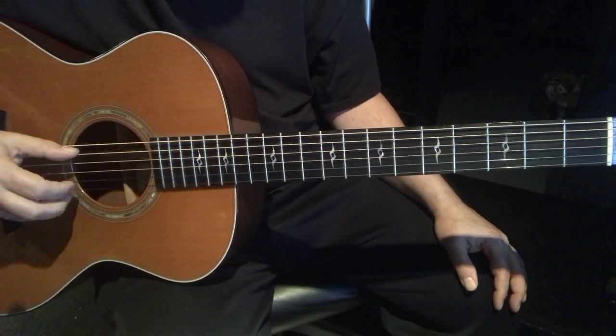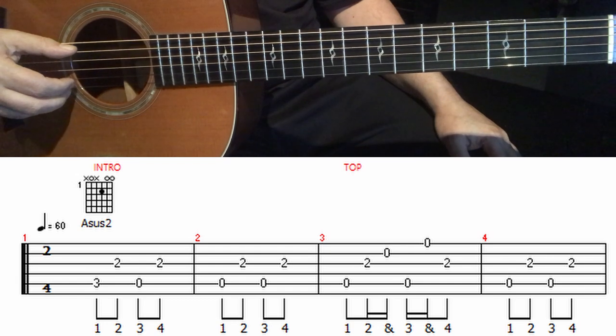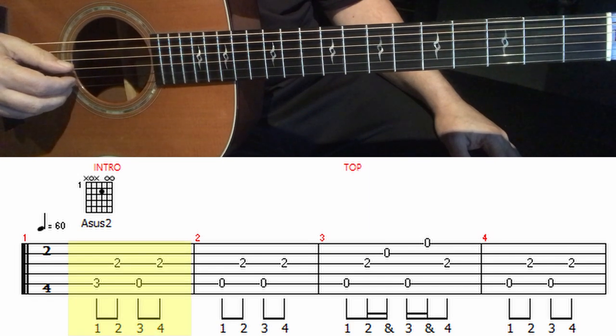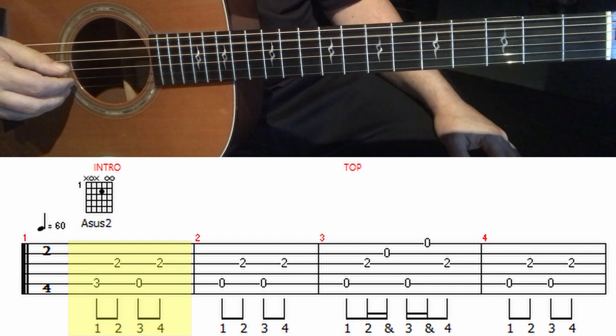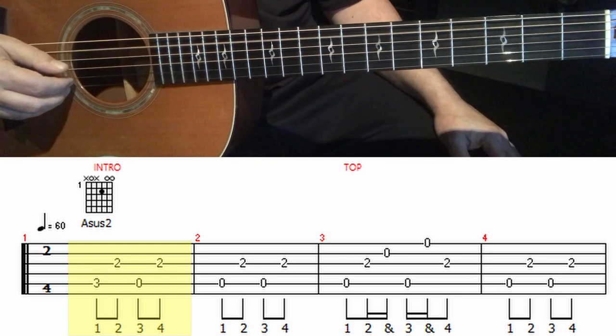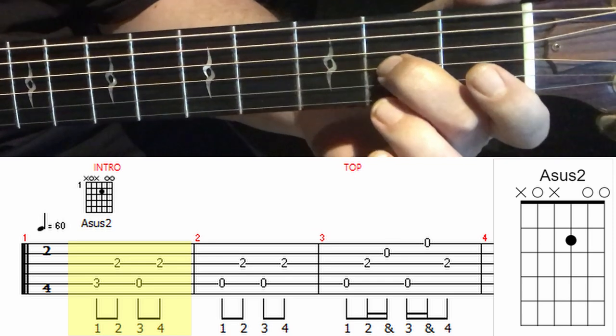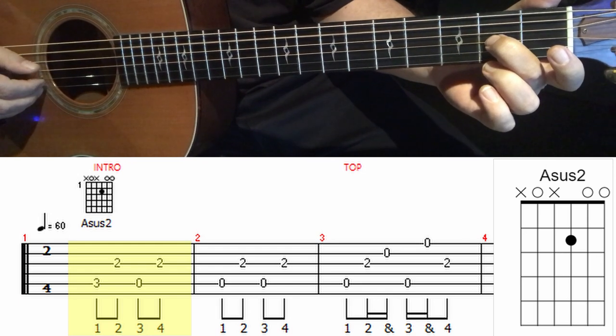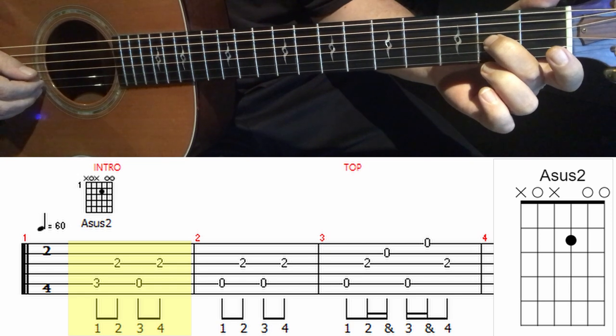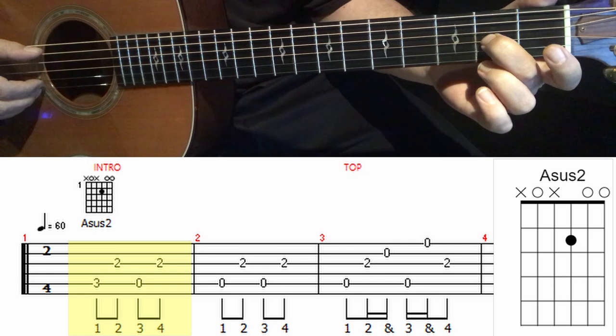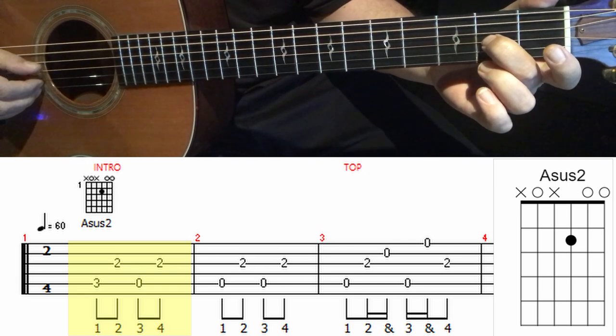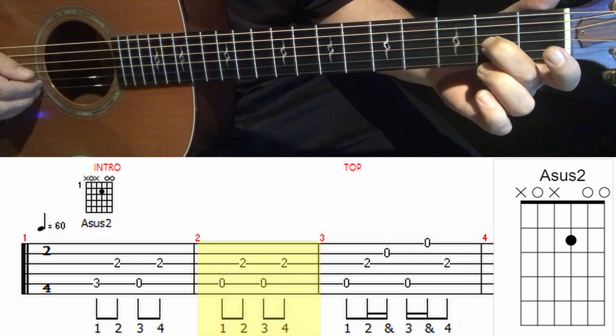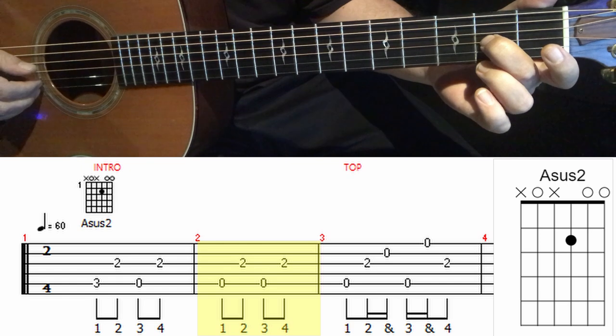All right, so the first two measures of this song is the intro, and if you're looking at the sheet music, it's very simple. It's counted out like this. We're going back and forth just with our thumb on strings five and three. One and two and three and four and. We're pressing two frets up with our middle finger on the third string. That's one measure.